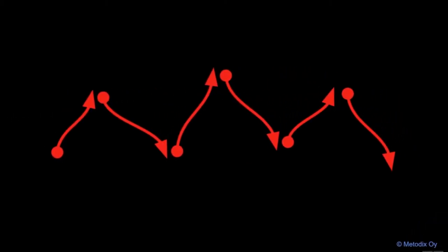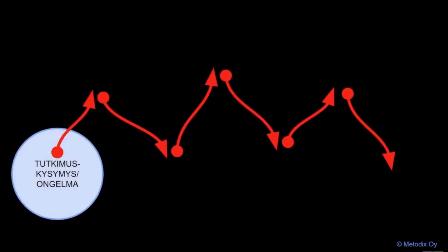Delphoi-prosessin vaiheet: kuten mikä tahansa tutkimusprosessi, Delphoikin käynnistyy siitä, että tunnistetaan joku avoin tutkimuskysymys tai kehittämisen kohde. Niitä löytyy koulusta ja sen ympäristöstä, varsinkin kun tarkasteluja laajennetaan tulevaisuuteen. Tutkimuskohteen voivat keksiä oppilaat, mutta usein sen määrittäjä on opettaja, jota silloin voi nimittää tutkimuksen tilaajaksi.